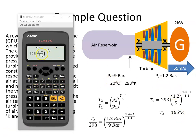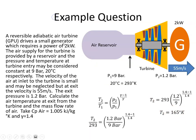And I'll just check that value now. So 293, 1.2, 9, and we have 164.7 which is close enough, 165 Kelvin. Okay, so that's the temperature.